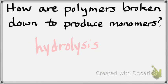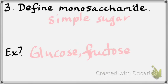Number three — we're moving back to page 28 and 29. Define monosaccharide, disaccharide, and polysaccharide, and give an example of each. Monosaccharide is a simple sugar. An example is glucose. I also mentioned fructose, because it's very common in your everyday diet — it's used a lot to substitute for table sugar.